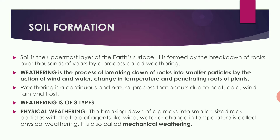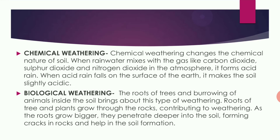Weathering is of three types: physical weathering, chemical weathering, and biological weathering. Physical weathering is the breaking down of big rocks into small-size rock particles with agents like wind, water, and change in temperature. It is also called mechanical weathering.